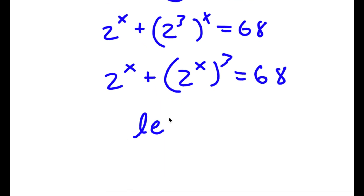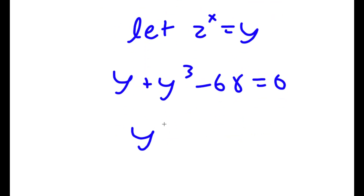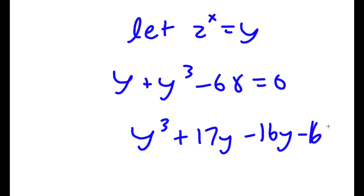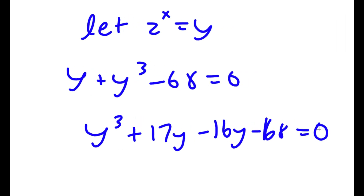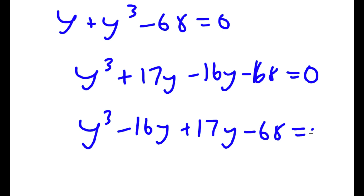Now I'm going to let 2 to the power of x equal the variable y. So now I have y plus y to the power of 3 minus 68 is equal to zero, and this is the same thing as y to the power of 3 plus — I'm going to write y as 17y minus 16y — minus 68 is equal to zero.